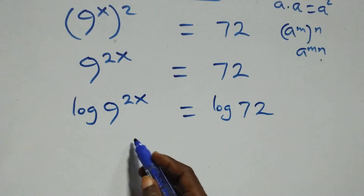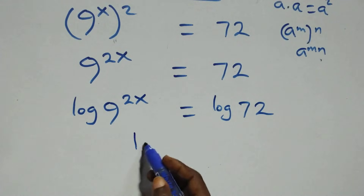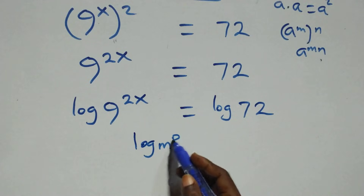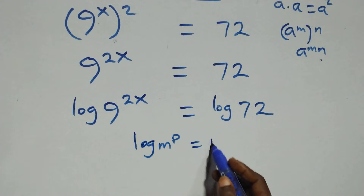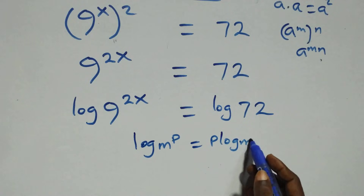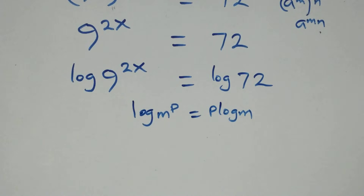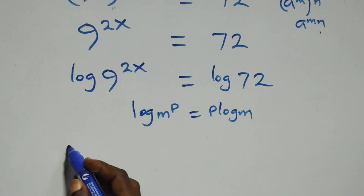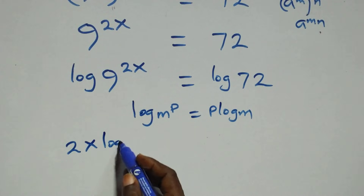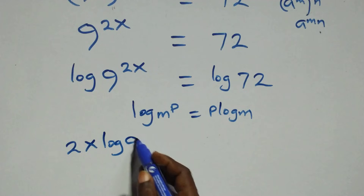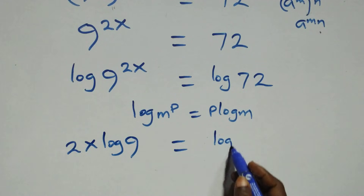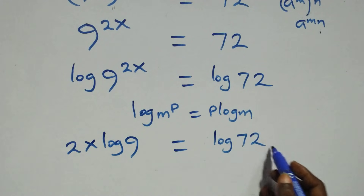Then here we apply the power rule of logarithm: when we have log n raised to power p, this is the same as p times log n. So we have 2x log 9 equals to log 72 here.